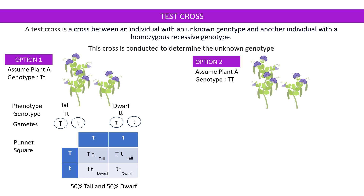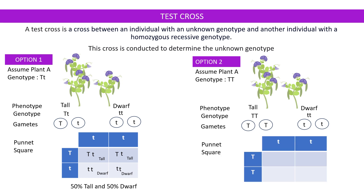In option two, if we assume that the plant is homozygous dominant, having a genotype capital T capital T, its gametes would be capital T capital T type. The other parent's gametes would be small t. When we do the Punnett square, we get offspring which are all tall. So when you get offspring which are 100% tall, that means the parent plant had a homozygous dominant genotype. Looking at the offspring, we are able to go back and identify the genotype of the plant displaying a dominant character but whose genotype was unknown. That is how a test cross works.